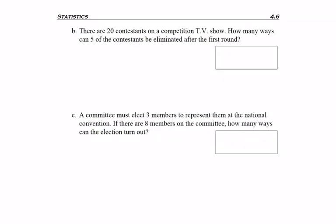Example B: if there are 20 contestants on a competition TV show, how many ways can five of the contestants be eliminated after the first round? Does order matter? Well, whether you were eliminated first or last, you were still one of the people eliminated — so no, order does not matter. Are repeats allowed? If you're eliminated, can you be eliminated again? No, once you're eliminated, that's it.